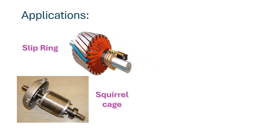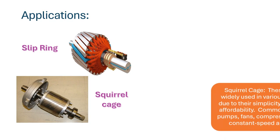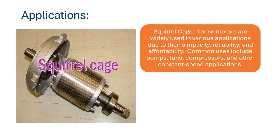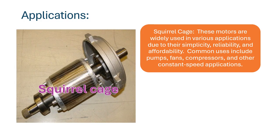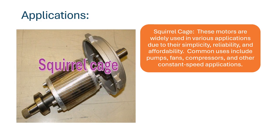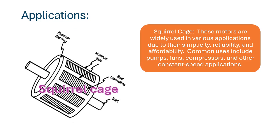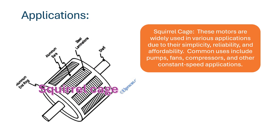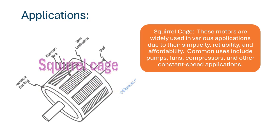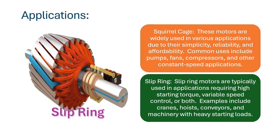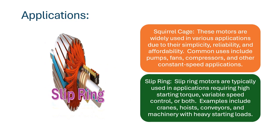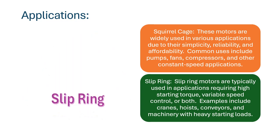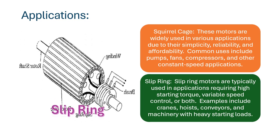Applications — Squirrel Cage: these motors are widely used in various applications due to their simplicity, reliability, and affordability. Common uses include pumps, fans, compressors, and other constant speed applications. Slip Ring: slip ring motors are typically used in applications requiring high starting torque, variable speed control, or both.